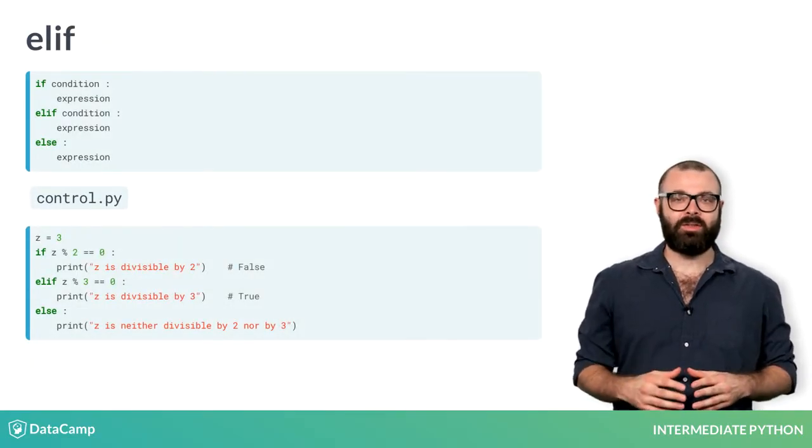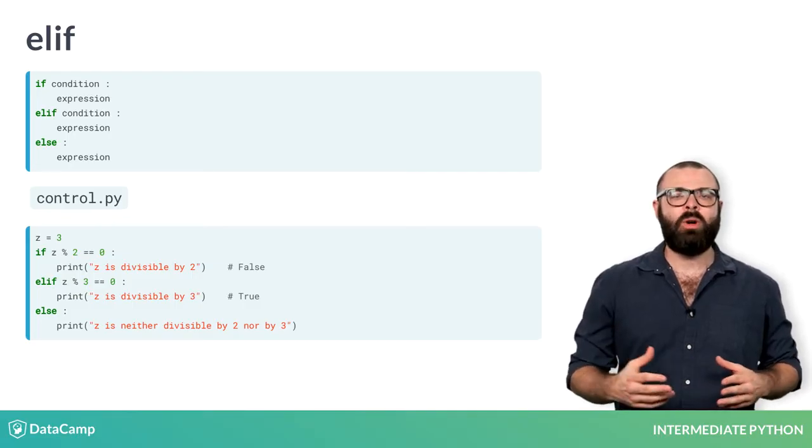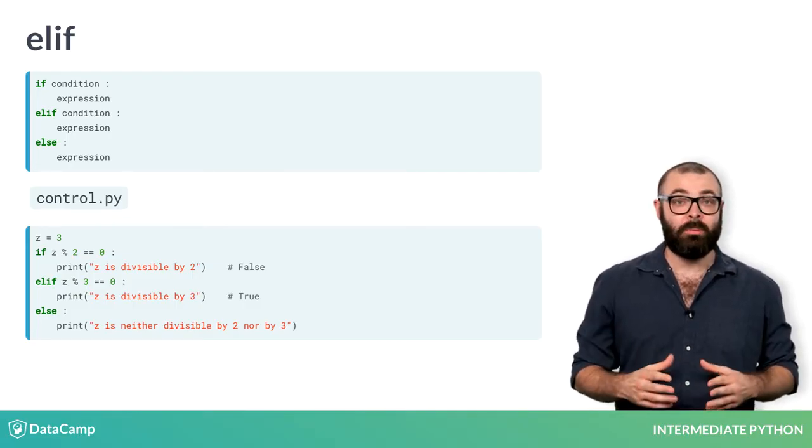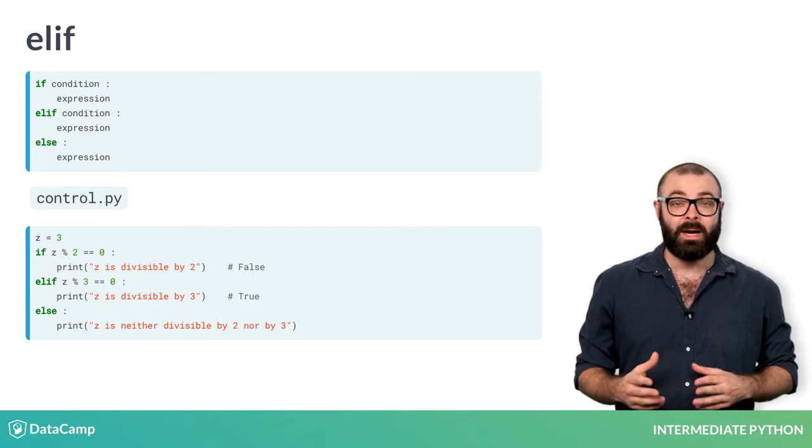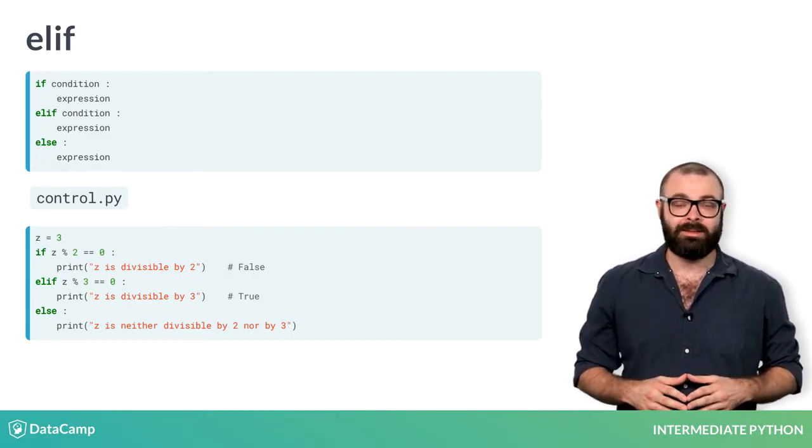You can think of cases where even more customized behavior is necessary. Say you want different printouts for numbers that are divisible by 2 and by 3. You can throw some elifs in there to get the job done. Take this example.